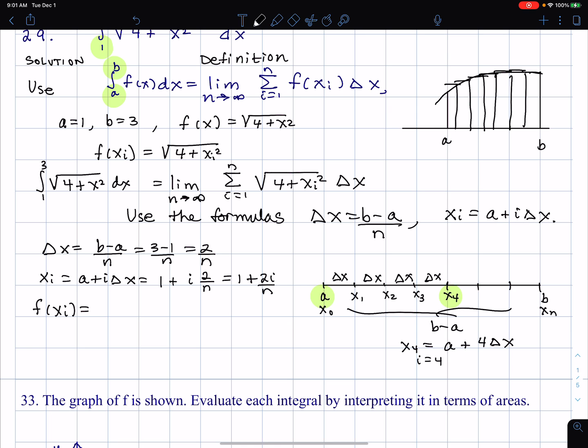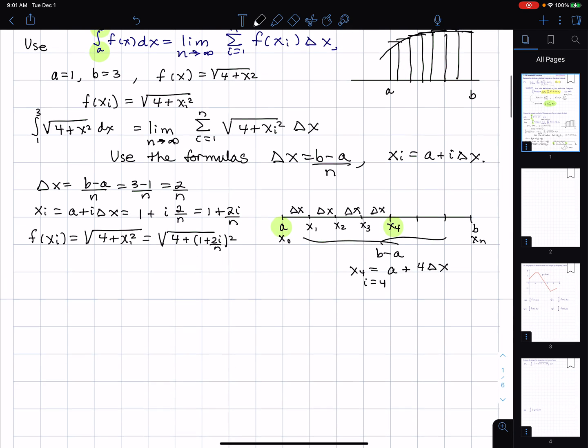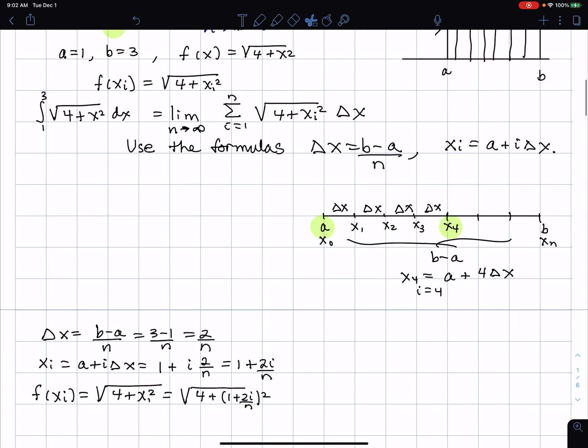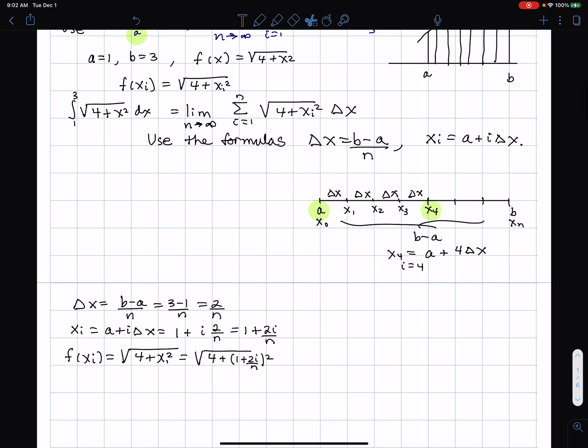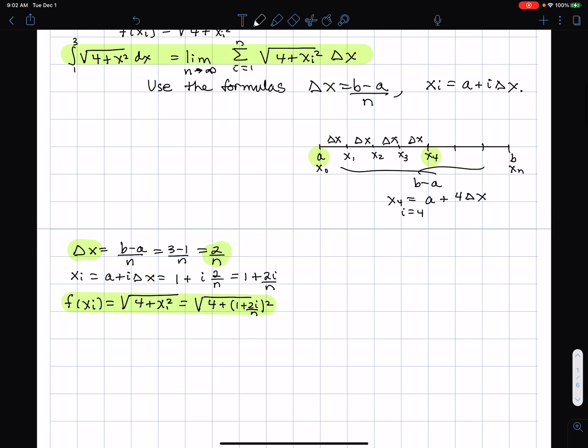So therefore, f of xi is equal to, as written above, square root of four plus xi squared. Well, that's going to equal square root of four plus (one plus two i over n) squared. I'm finding myself sort of getting cramped here, which is never good. That's one of the big problems: you don't want to make everything too closely together. Alright, so now I'm going to follow up with what I had from above here. I'm making my way on the answer. And I'm just going to fill in now. Delta x is two over n and f of xi is this expression here. So I'm ready to go for the final answer.